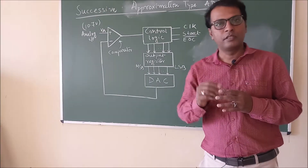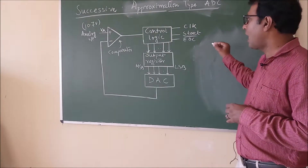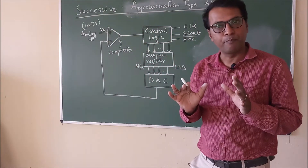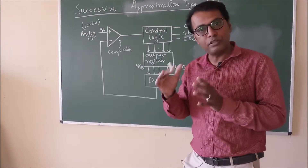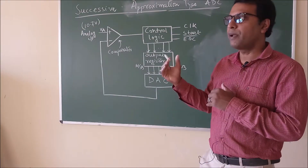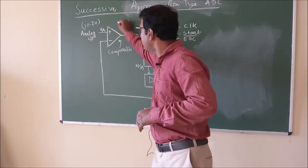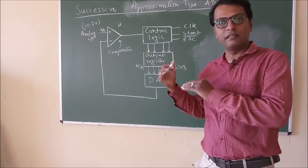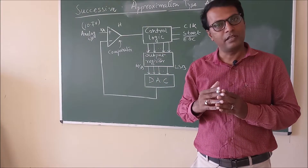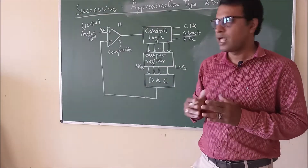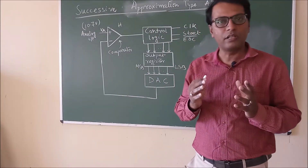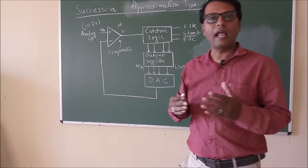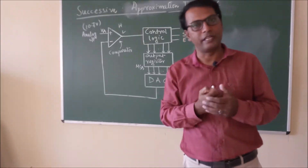Now, two outputs will be provided. The analog input is applied at the non-inverting terminal. If the analog input is more or high, then the comparator output is high, and it will retain the earlier value of the control output register. If the DAC output is more than the analog input, then the comparator output will be low, and it will reset that particular bit of the output register.